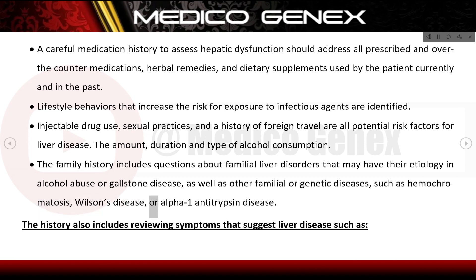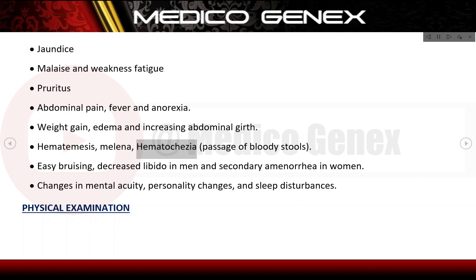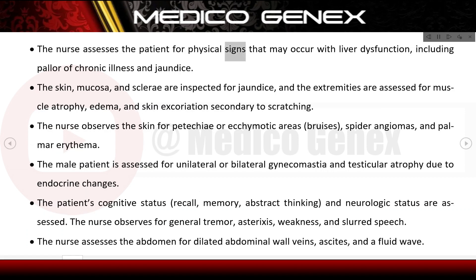The history also includes reviewing symptoms that suggest liver disease such as jaundice, malaise, weakness, fatigue, pruritus, abdominal pain, fever, anorexia, weight gain, edema, and increasing abdominal girth. Additional symptoms include hematemesis, melena, hematochezia, easy bruising, decreased libido in men, secondary amenorrhea in women, changes in mental acuity, personality changes, and sleep disturbances.